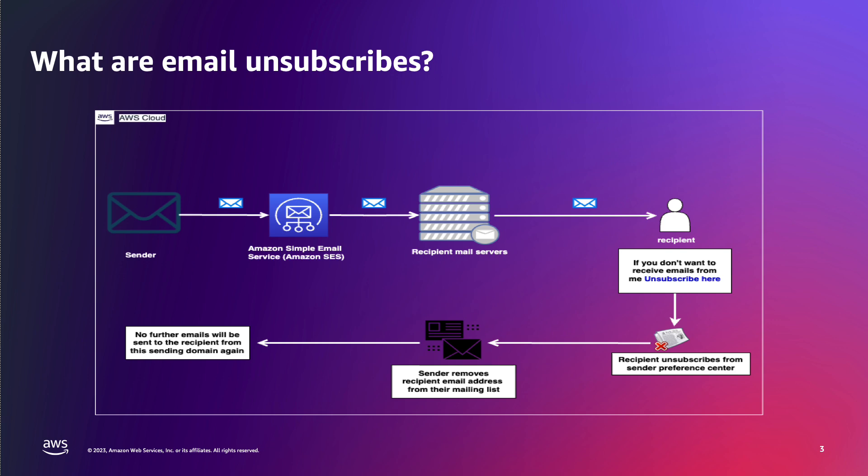As a result, it's recommended that senders set up different mail channels with different sending domains, along with features such as a preference center. This will allow recipients to unsubscribe from specific channels, products, or programs. Senders do want to ensure they are following the relevant laws when it comes to implementing unsubscribes in their email messages.